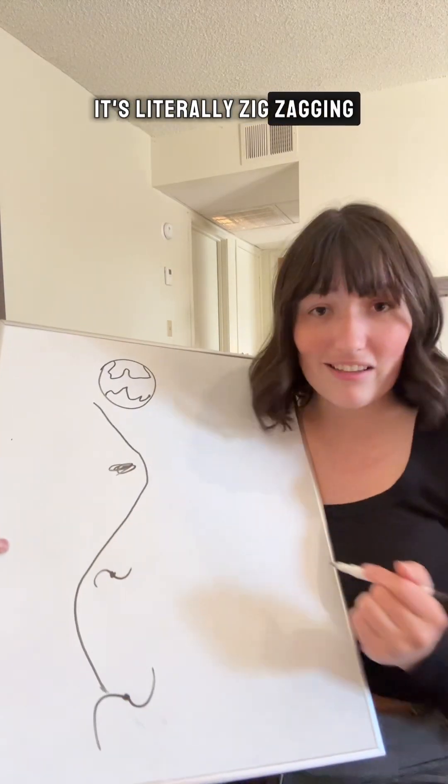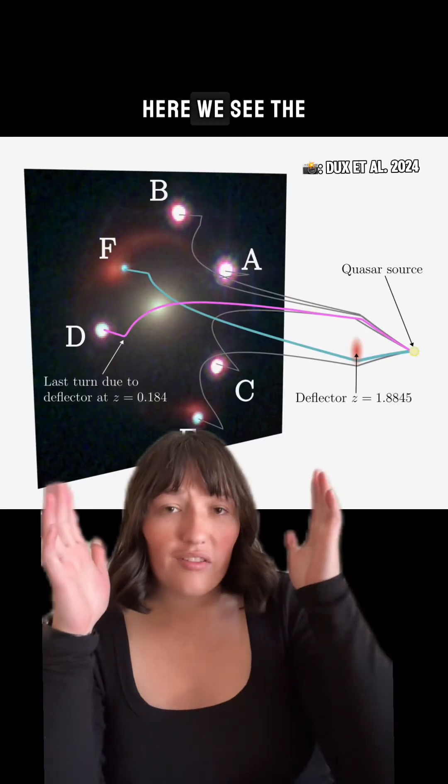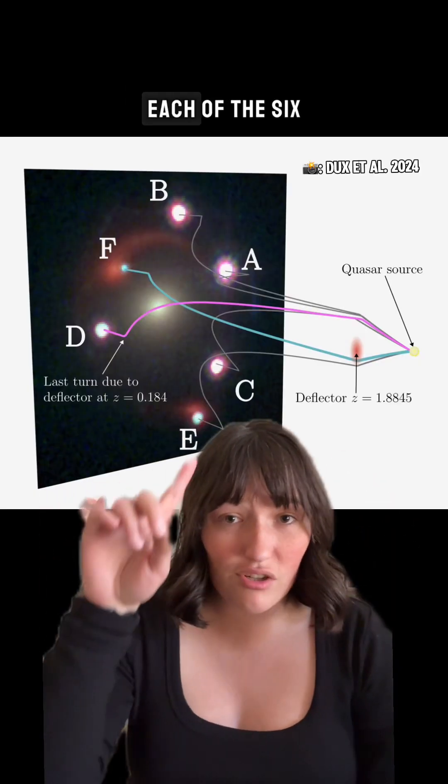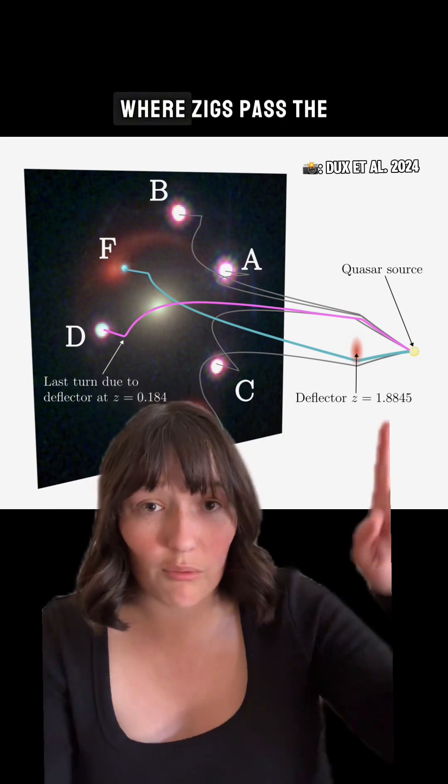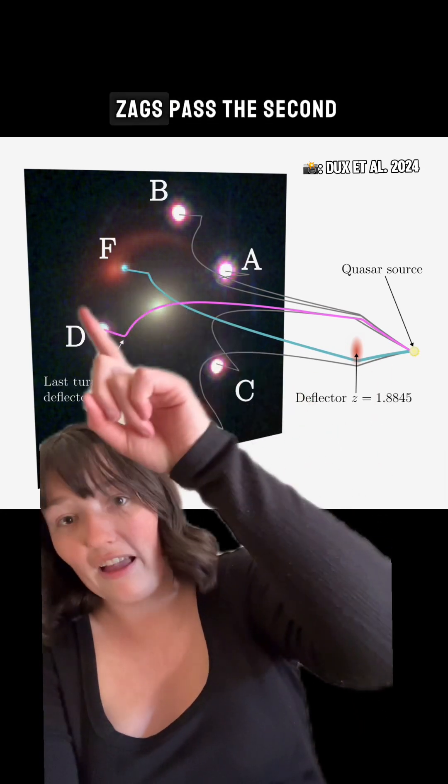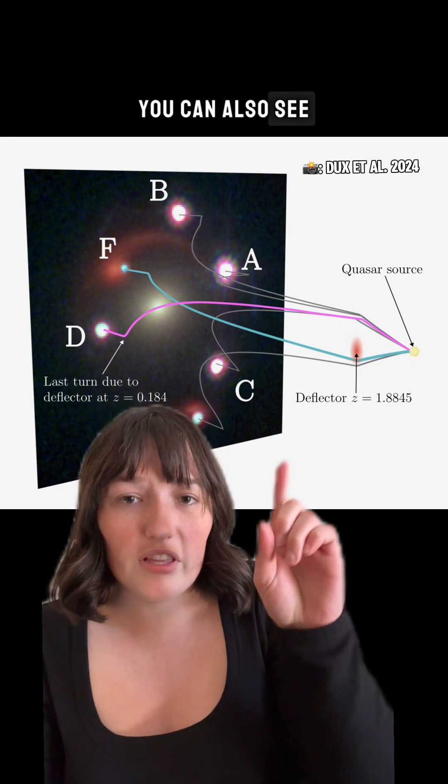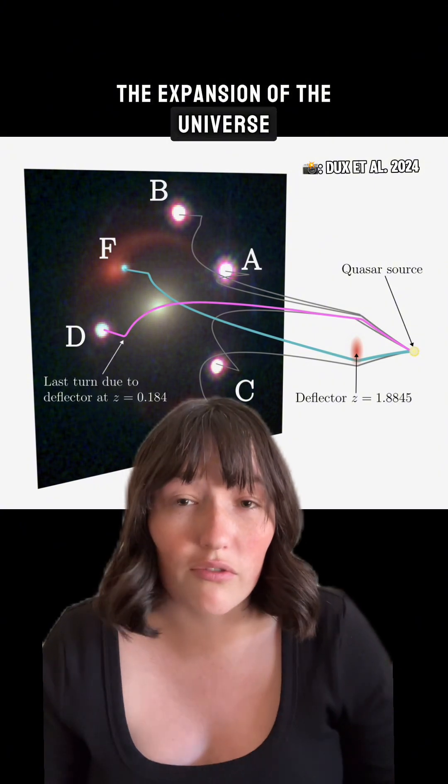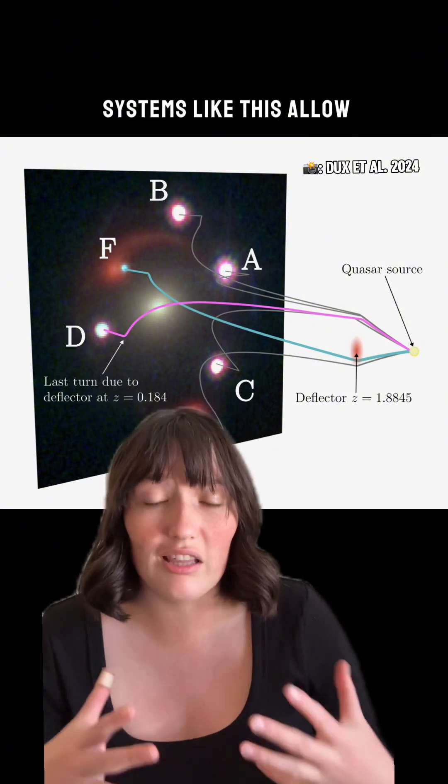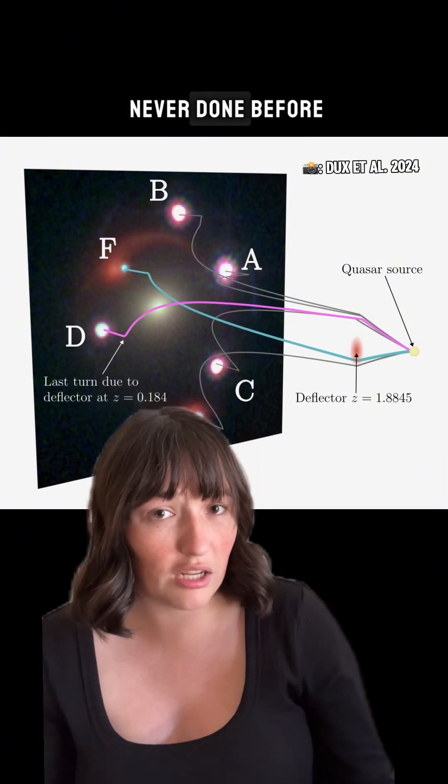It's literally zigzagging across the universe to us. Here we see the path light took to create each of the six images of the quasar. Only two of them do the true zigzag, where it zigs past the first source and then zags past the second. You can also see here the way that the light is getting curved outward. That is due to the expansion of the universe, which is something that systems like this allow us to study in a way we've never done before.